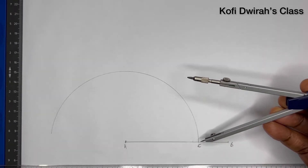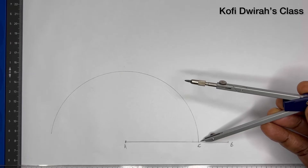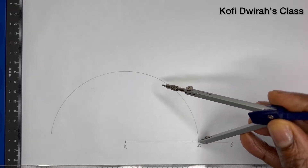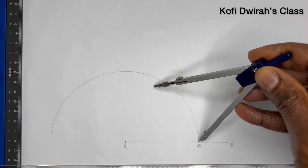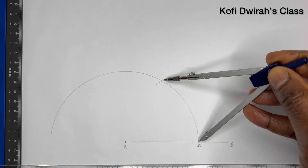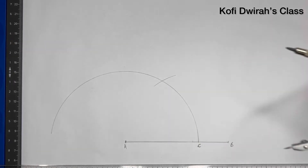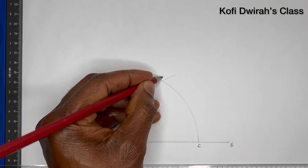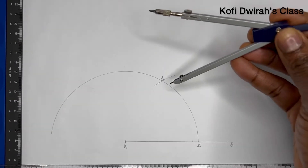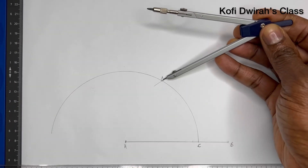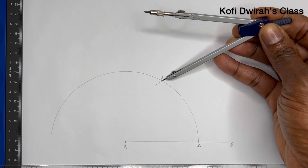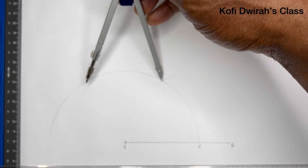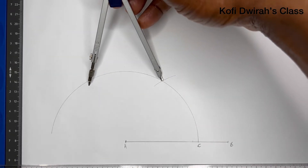With your compass at point C, with the same radius, you draw an arc to get point D. Then at point D, with the same radius, you draw another arc.